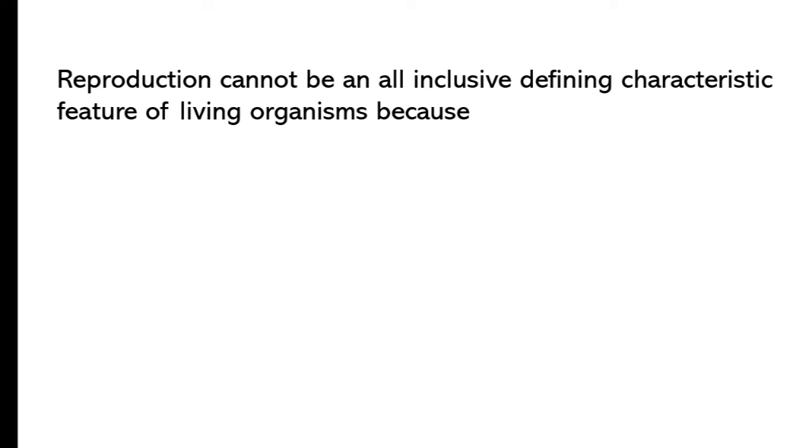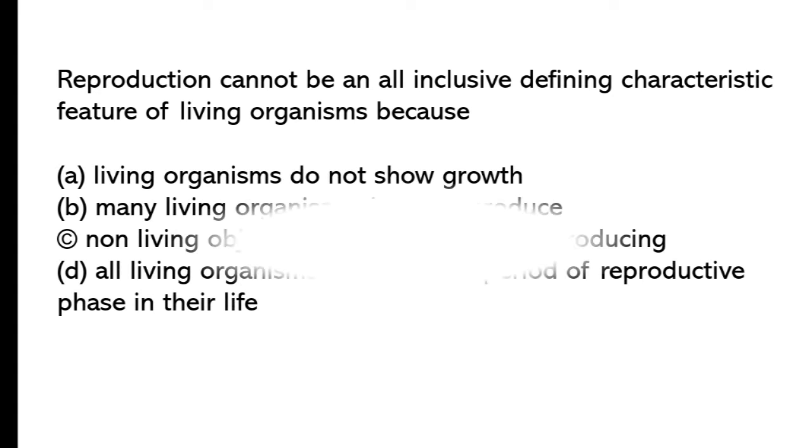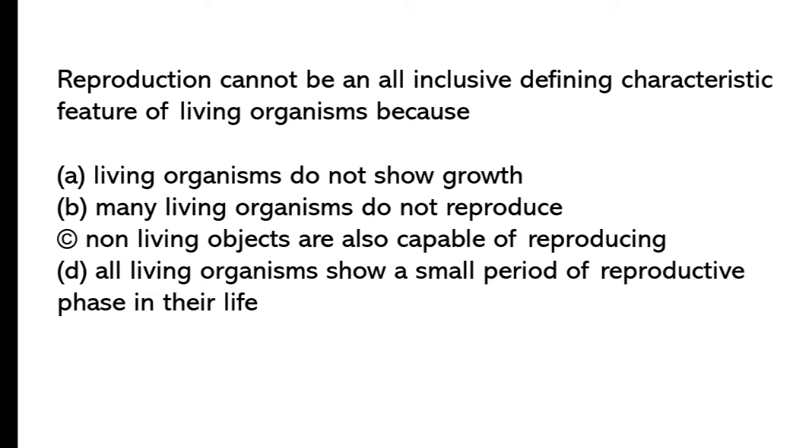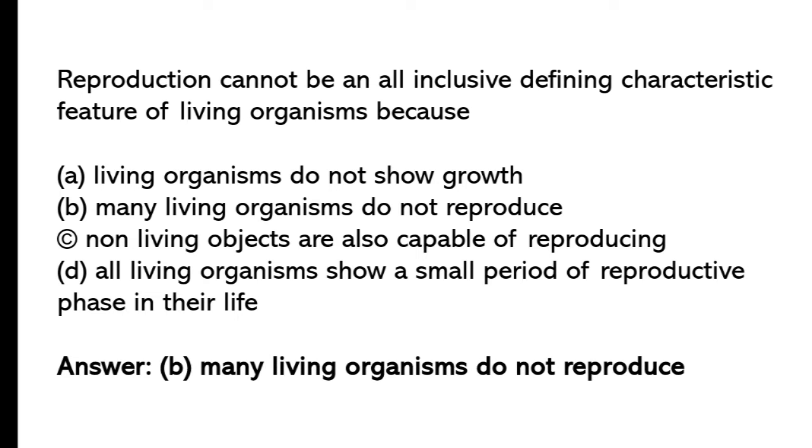Reproduction cannot be an all-inclusive defining characteristic feature of living organisms because: Living organisms do not show growth. Many living organisms do not reproduce. Non-living objects are also capable of reproducing. All living organisms show a small period of reproductive phase in their life. So the correct answer is option B, many living organisms do not reproduce.